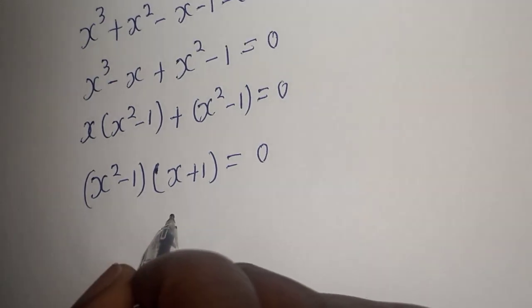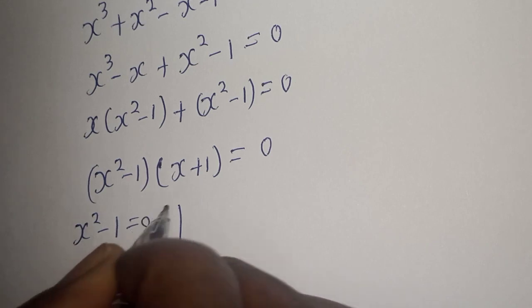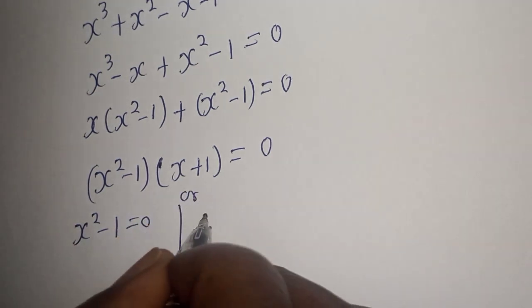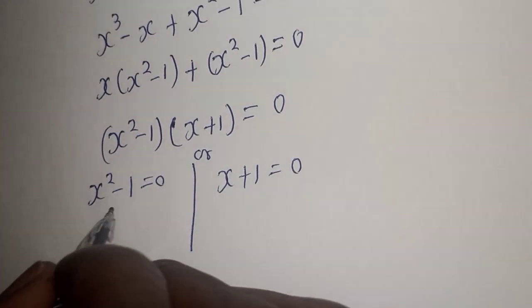There are two cases here. The first case is s square minus 1 is equal to 0 or s plus 1 is equal to 0. And let's consider this first.